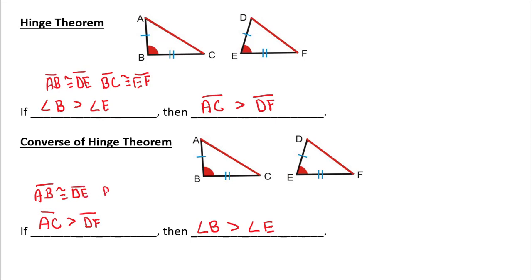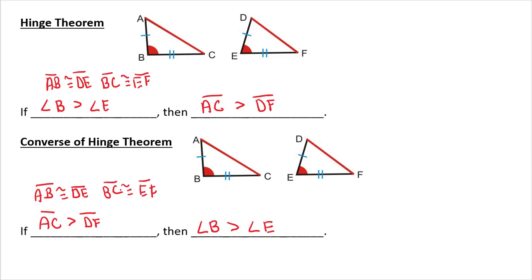If these sides in between the included angle aren't congruent, then this hinge theorem doesn't work. Our first example: compare the measures of AD and BD. So first confirm your congruent sides. They marked one congruent for us. They marked that congruent. The common side is congruent.